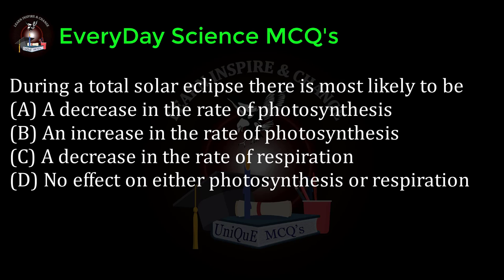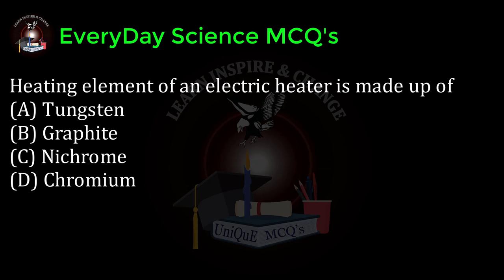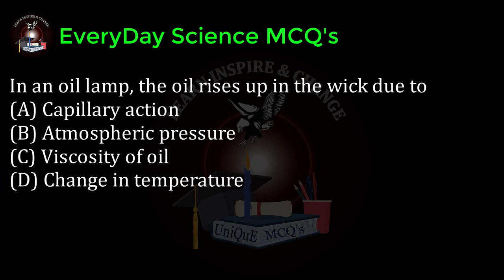During a total solar eclipse there is most likely to be: a) a decrease in the rate of photosynthesis, b) an increase in the rate of photosynthesis, c) a decrease in the rate of respiration, d) no effect on either photosynthesis or respiration. Correct answer: a.